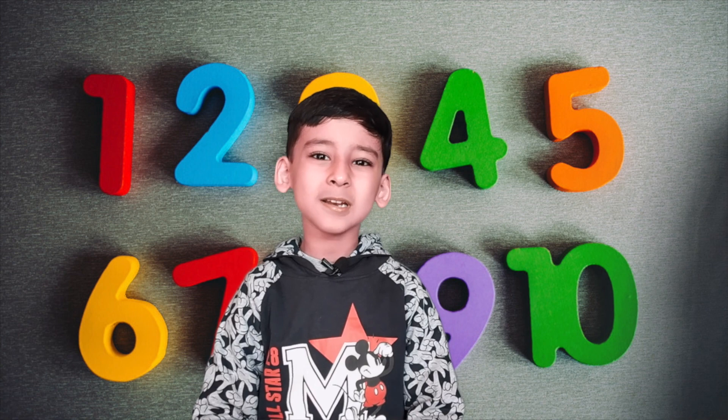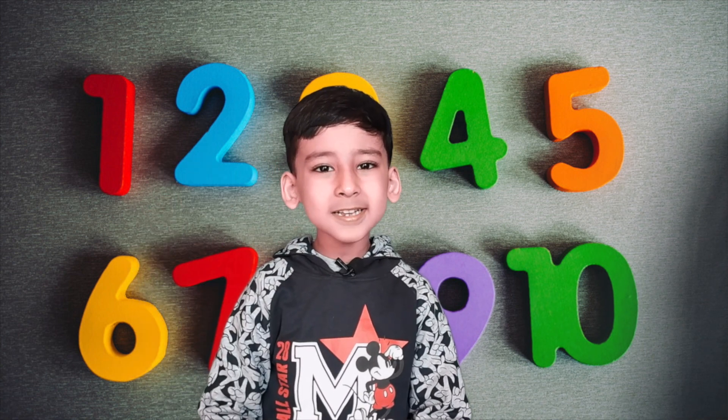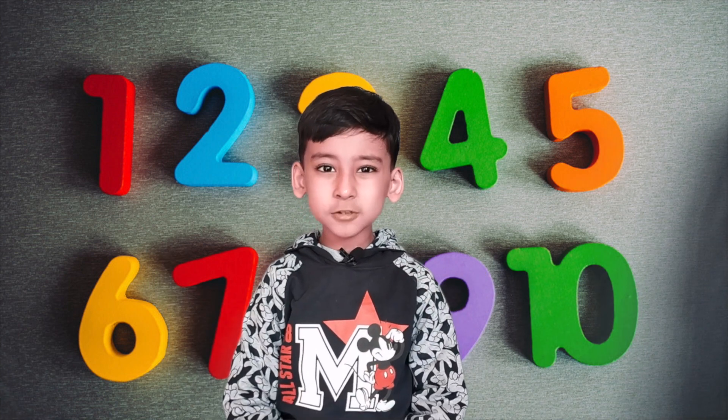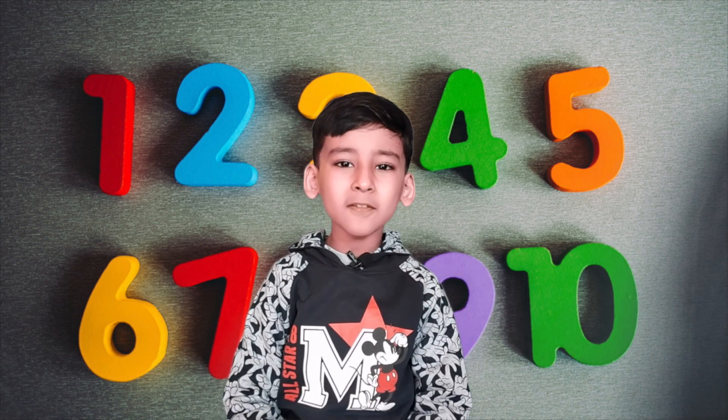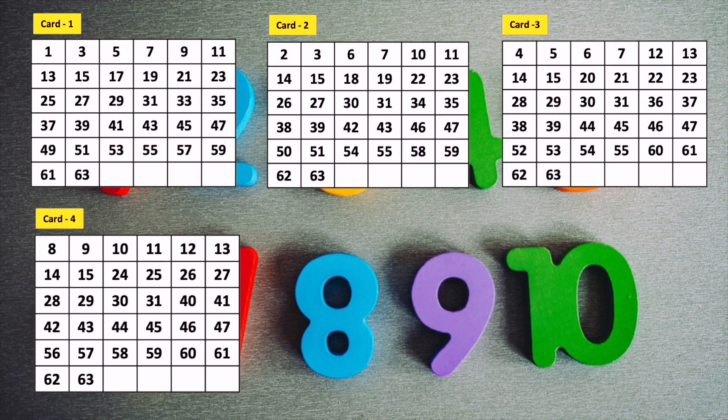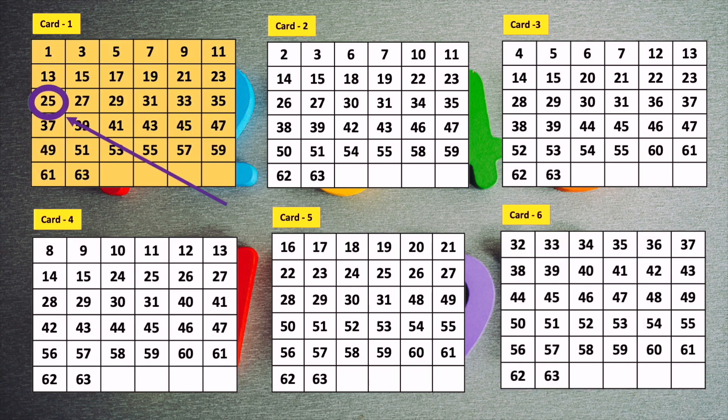To play the trick, ask your friend to choose a number between 1 to 63 and ask your friend not to reveal his number. Suppose your friend chooses 25 in his mind. Then show your friend all the cards one by one and ask him which card has his number.